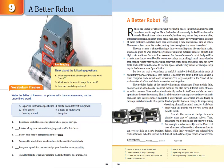Unit 9 – A Better Robot. Robots are useful for exploring and working in space. In particular, many robots have been sent to explore Mars. Such robots have usually looked like a box with wheels. Though these robots are useful, by their very nature they are unreliable, extremely expensive, and they break easily. Also, they cannot do very many tasks.